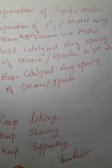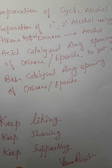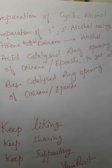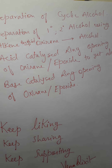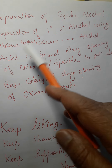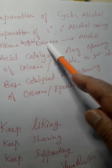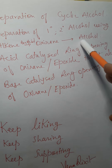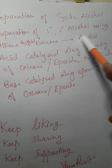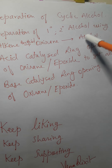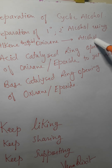Hello students, today we will discuss the preparation of cyclic alcohols — preparation of primary and secondary alcohols using alkene or epoxide, followed by hydrolysis or attack of a nucleophile to get the alcohol.